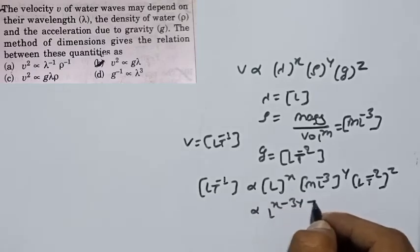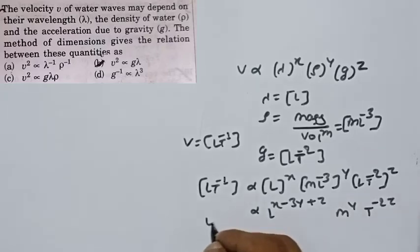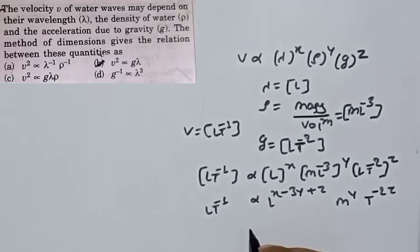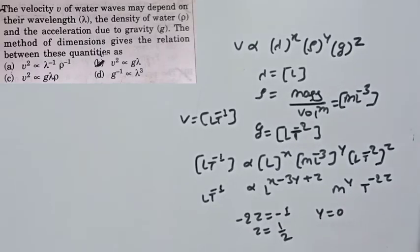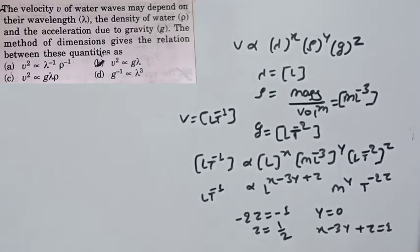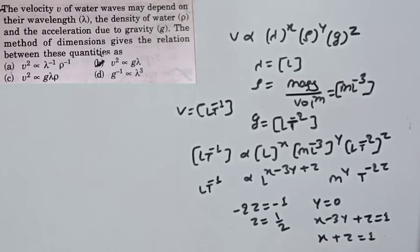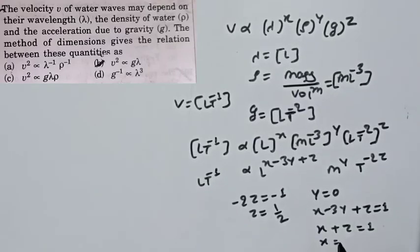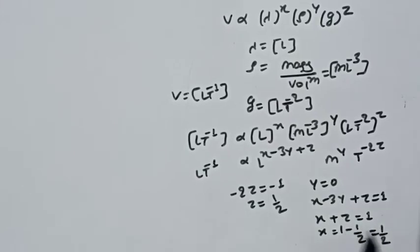Comparing exponents: for M, y = 0. For T: minus 2z = minus 1, so z = 1/2. For L: x minus 3y plus z = 1. Substituting y = 0 and z = 1/2: x + 1/2 = 1, so x = 1/2. Therefore x = 1/2, z = 1/2, and y = 0.